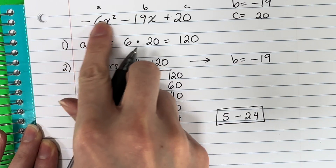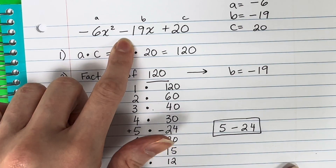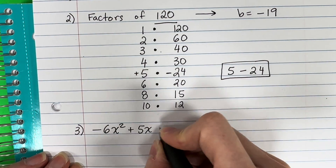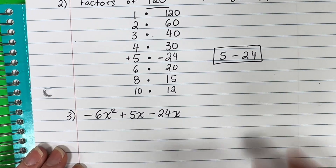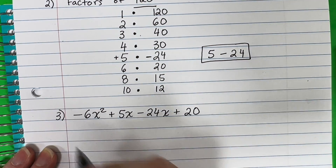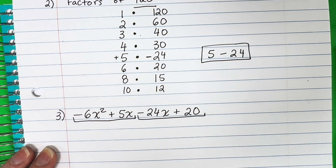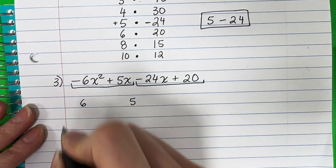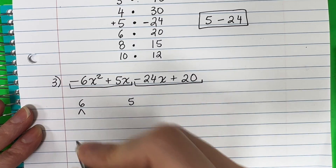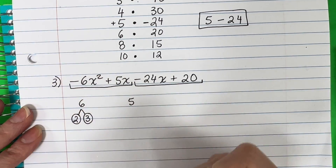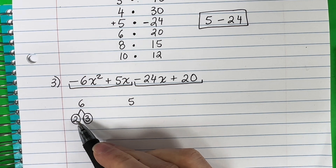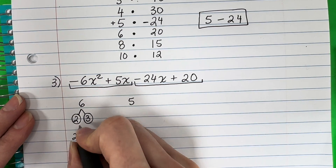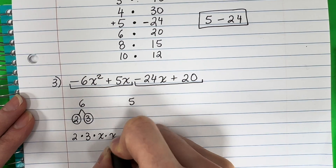So write: negative 6x squared, then positive 5x minus 24x, plus 20. Now separate the first two terms together and the last two together, and find their factors using a factor tree. For 6x squared and 5x: factor 6 as 2 times 3, both prime. That gives 2 times 3 times x times x. Factor 5x as 5 times x — 5 is prime, so just 5 times x.